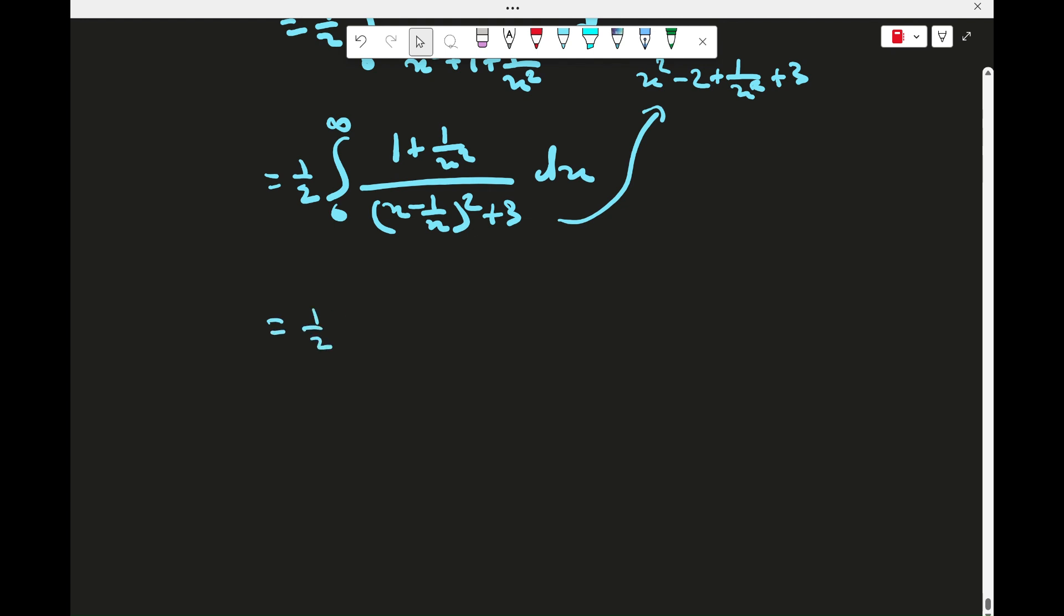We have half of... We could do a u sub here, but I don't know if I'm bothered. But anyway, so the top is actually the derivative of this thing here. So this is an inverse tan integral. 1 on root 3 inverse tan, x minus 1 on x on root 3. And we're evaluating from 0 to infinity.